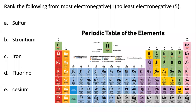The first question deals with another periodic trend that involves Lewis structures, and that periodic trend is electronegativity. Electronegativity is the ability of an element to pull electron density towards it.